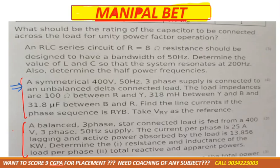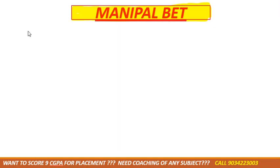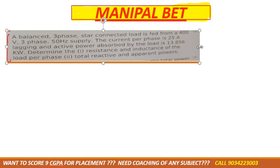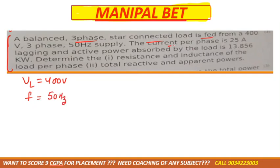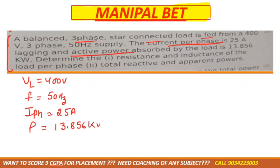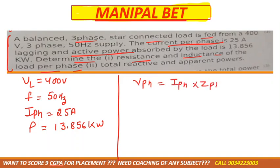Next question — balanced 3-phase star-connected load. This is from the 2018 paper. A balanced 3-phase star-connected load is fed from a 400V supply at 50Hz. Current per phase IPH = 25A lagging, and active power absorbed P = 13.856 kW. Determine the resistance and inductance of the load per phase. The formula is: VPH = IPH × ZPH.